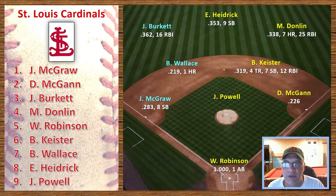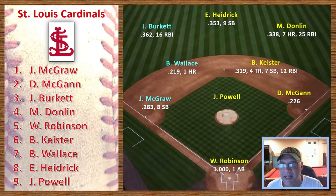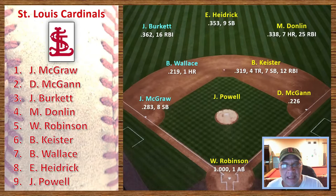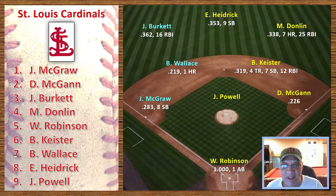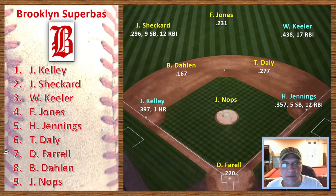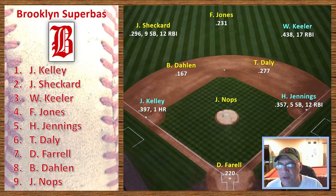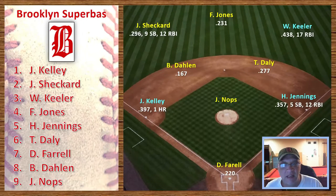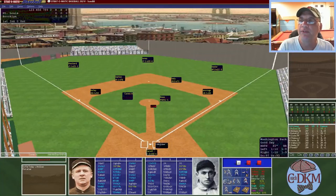Starting lineups: no changes for St. Louis — McGraw leading off, McGann batting second, Burkett the left fielder with 16 RBIs batting third, Donlin with seven home runs and 25 RBIs batting fourth, Robinson at catcher batting fifth, Keister at second base batting sixth, Wallace the Hall of Famer batting seventh hitting .219, Hedrick the center fielder hitting .353 with nine stolen bases batting eighth, and Powell batting ninth. For Brooklyn, Kelly the third baseman hitting .397 leads off, Sheckard batting second, Keeler hitting .438 batting third, Fielder Jones batting fourth, Jennings the first baseman hitting .357, Daily the second baseman, Farrell the catcher, Dollin the shortstop at .167, and Knops batting ninth. A beautiful day at Washington Park in Brooklyn.